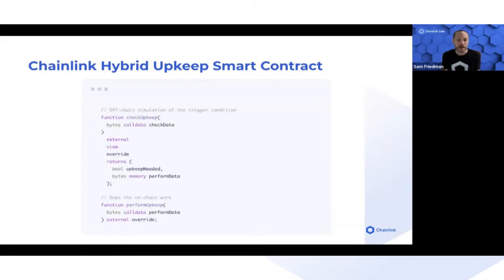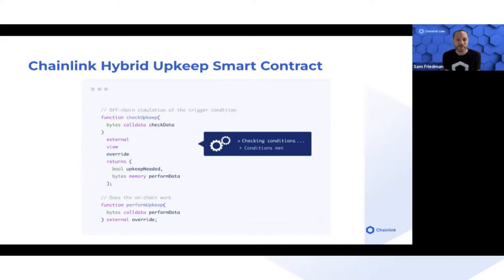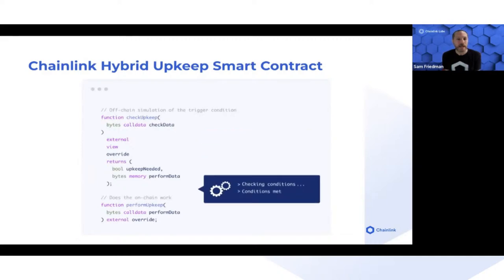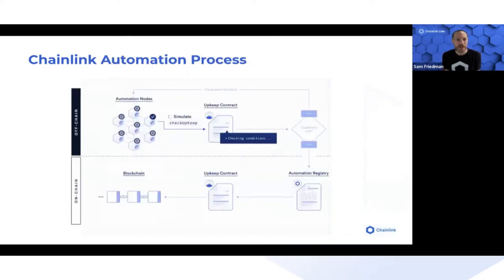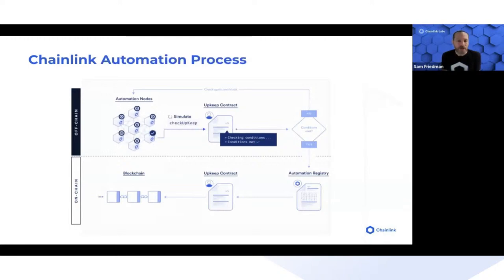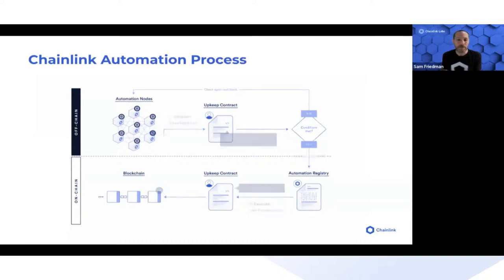That way we're not looping through large data sets on-chain. Here we have an example of the process: the automation nodes take turns monitoring all of the users' upkeep contracts that have been registered.